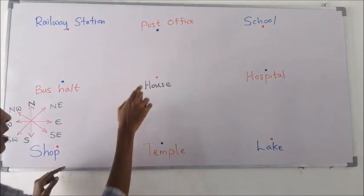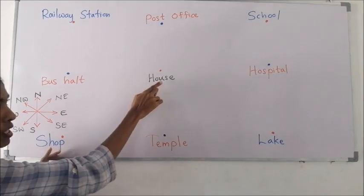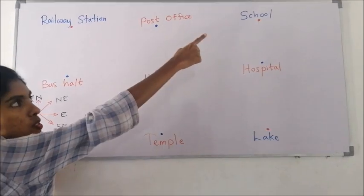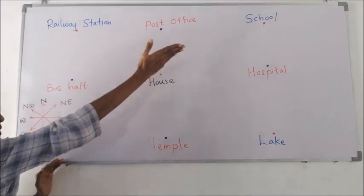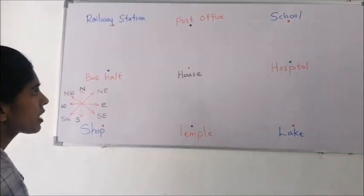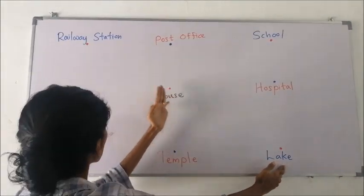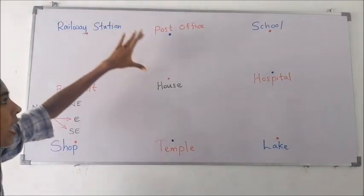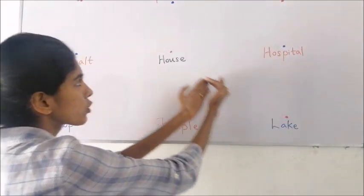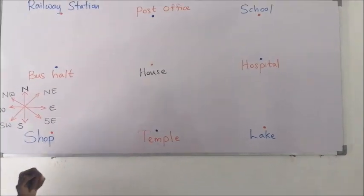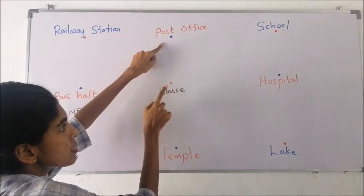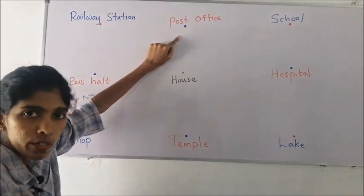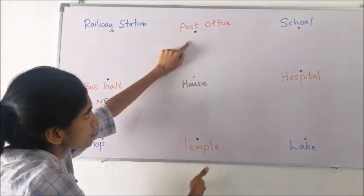When we consider the house and school from the shop, both the house and the school are located to the north-east direction of the shop. By standing at the lake and looking at the house and railway station, both the railway station and the house are located to the north-west direction of the lake. By standing at the post office, the house and the temple both are located to the south direction of the post office.